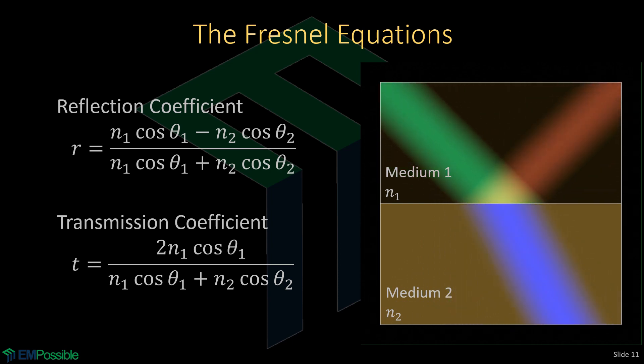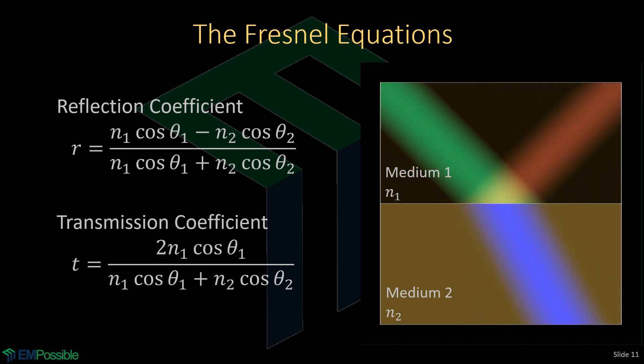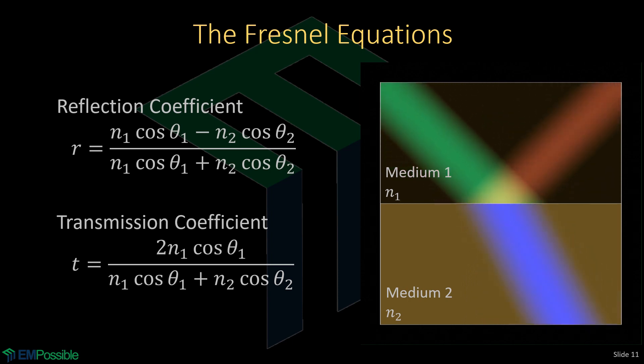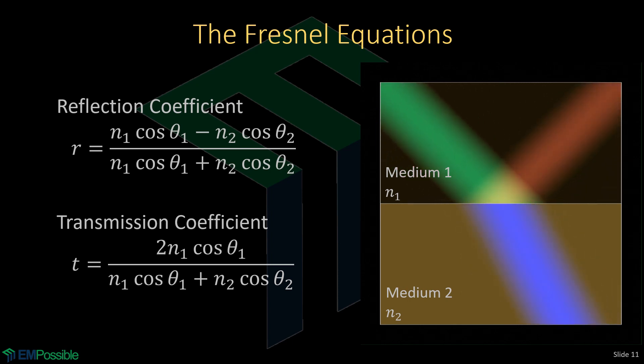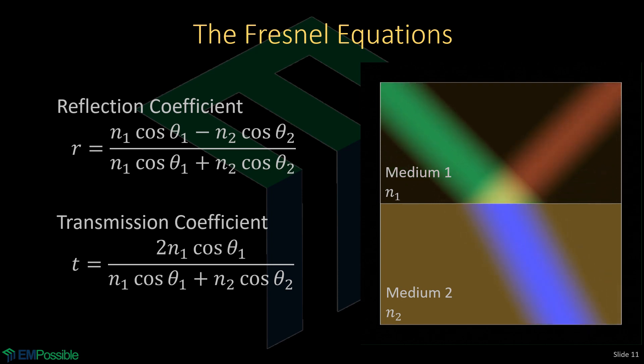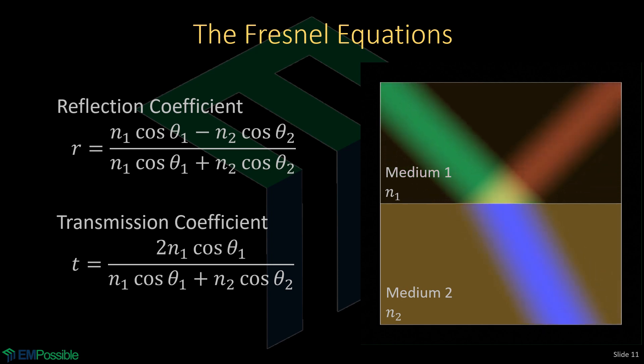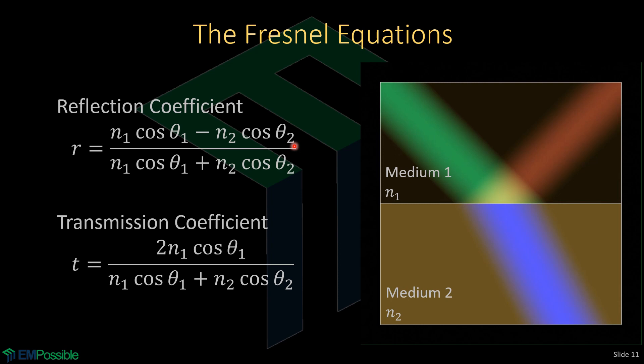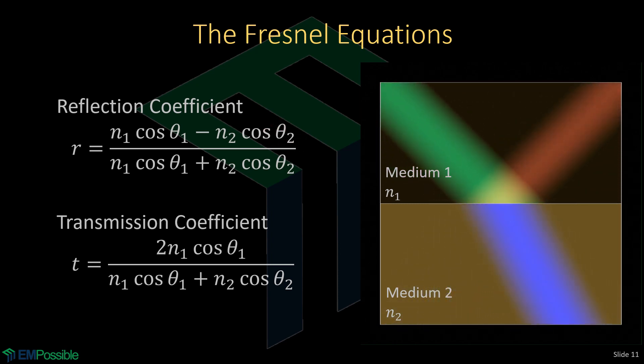There's another thing that we need to consider, something called the Fresnel equations. When a wave encounters an interface between two mediums, yes it reflects and yes it transmits. And Snell's law of refraction predicts the angles. But how much reflects and how much transmits? Well, it turns out those come from the Fresnel equations. And just looking at these equations, we don't really need to understand a whole lot about them, other than they contain our angles. They contain the angle of incidence and the angle of transmission. Therefore, the amount of that wave that transmits or reflects depends on the angle.